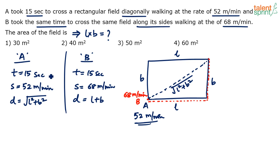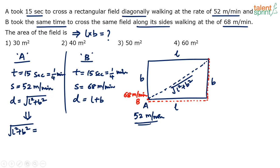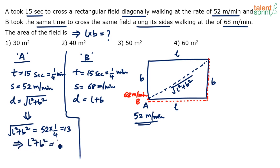15 seconds is one fourth of a minute, so both have taken 1/4 of a minute to cover their distances. Distance equals speed times time. For A: 52 × 1/4 = 13. So √(L² + B²) = 13, which simplifies to L² + B² = 169. That's Equation 1. Remember, whenever you deal with time-distance problems, units must be balanced — 15 seconds converted to minutes is 1/4.